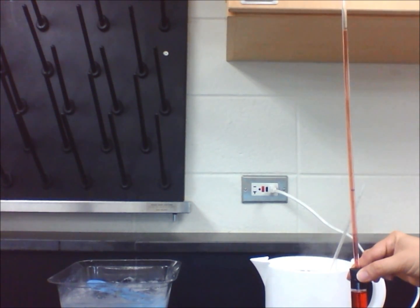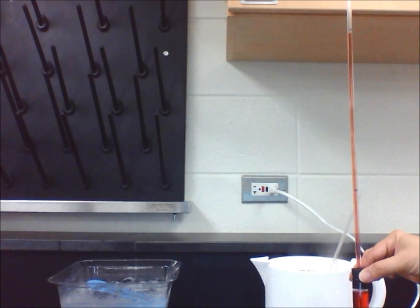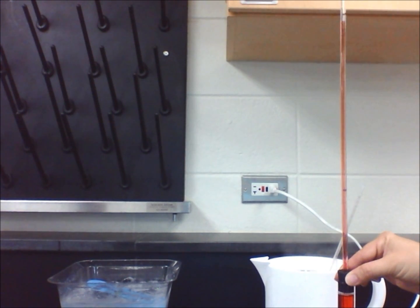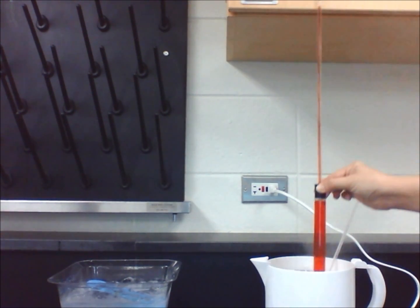If we decrease the size of the thermometer bulb, we can expect our thermometer to have a quicker response time because the volume of liquid will be less. Oppositely, if we increase the size of the thermometer bulb, we can expect our thermometer to have a slower response time because the volume of liquid will be more.